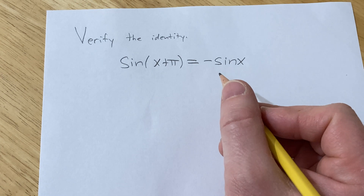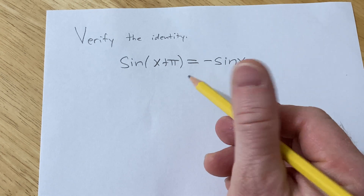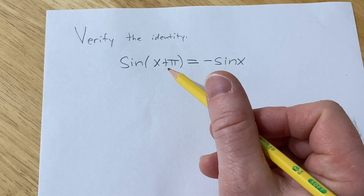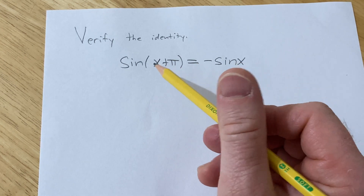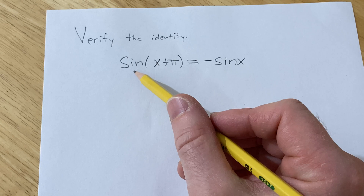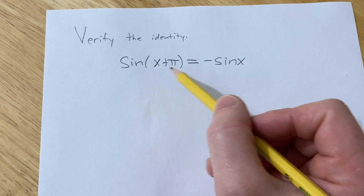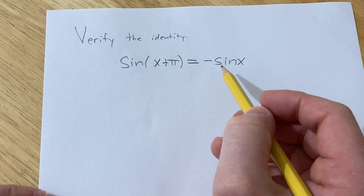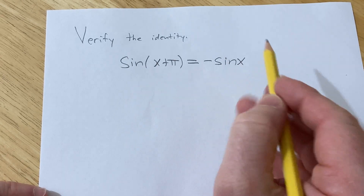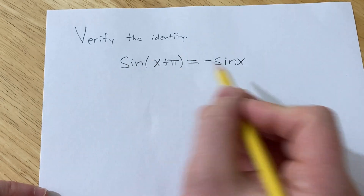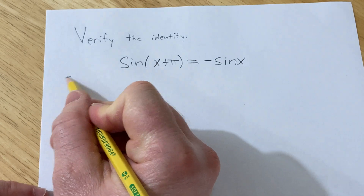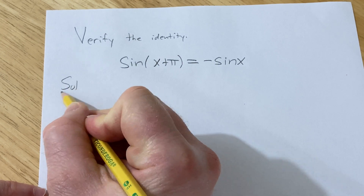Hello. In this problem we're going to verify this trigonometric identity. We have the sine of x plus pi, and that's equal to negative sine x. Let's go ahead and do it.